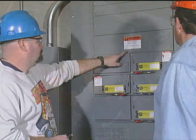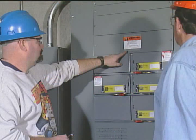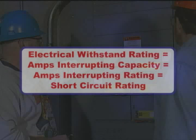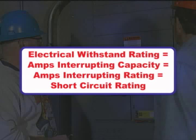Electrical systems have to be rated to withstand the large amounts of current flow created during a ground fault condition. The electrical withstand rating is called the amps interrupting capacity, or rating. It may also be called the short circuit rating, depending on the device or component being referred to in the electrical system. These numbers are usually in the thousands of amps category.